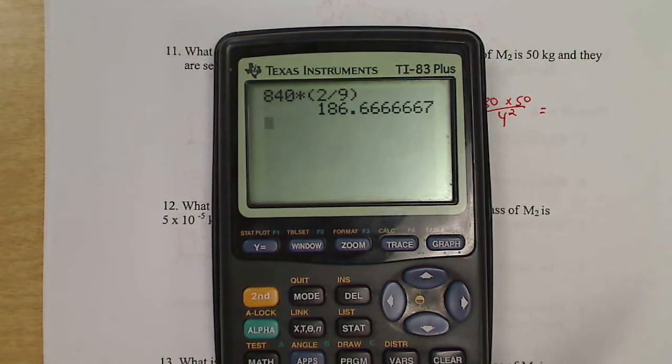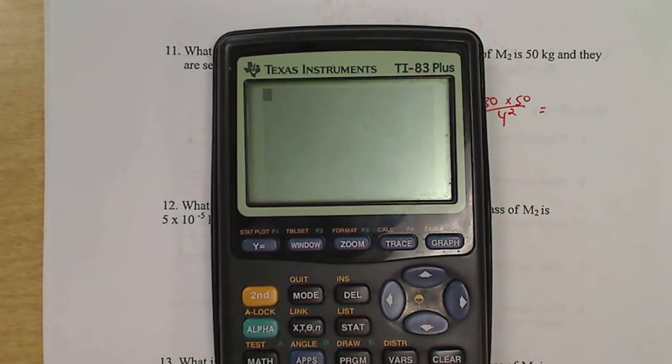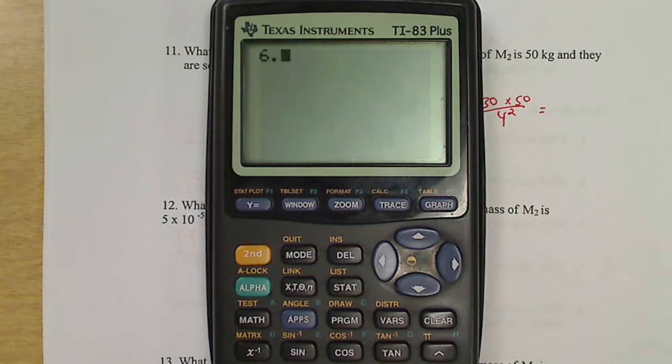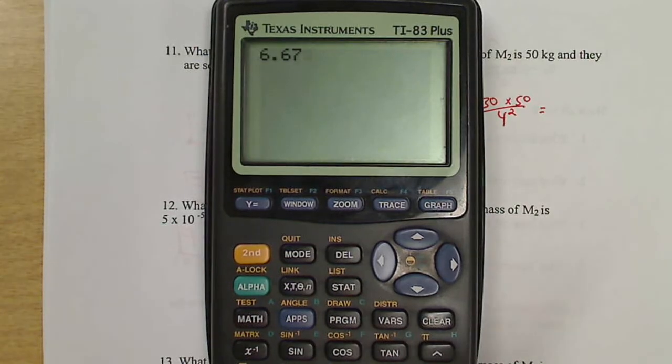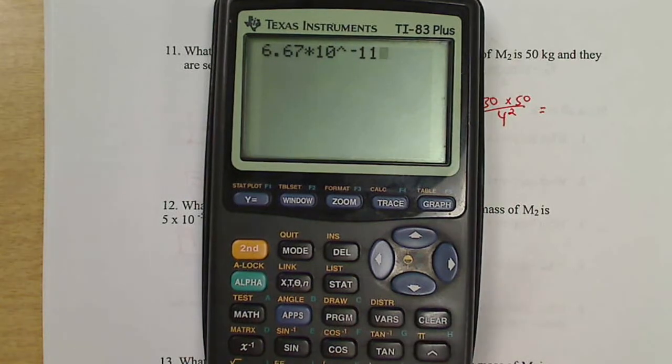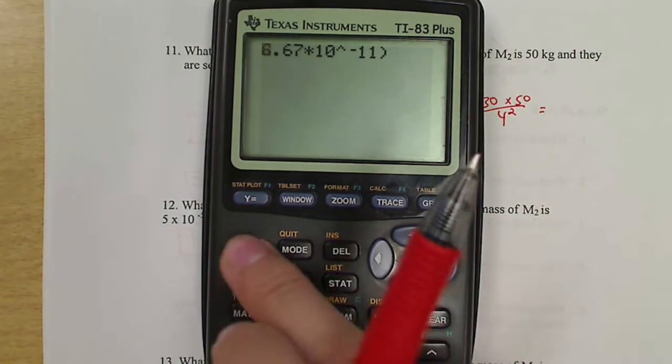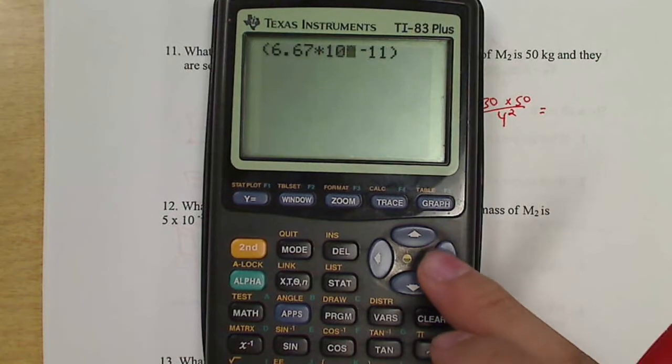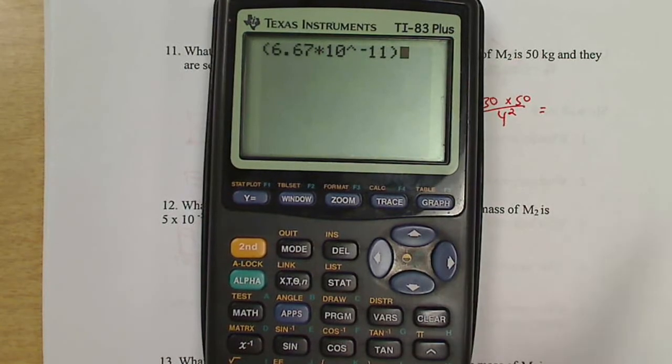In our calculator, there are two ways to do it. We can do 6.67 times 10 to the negative 11. Now of course we're going to want to put parentheses around it. Yes, I can use that number just fine.